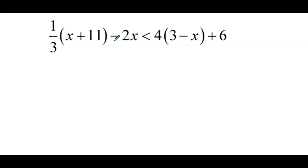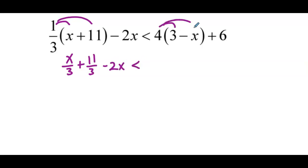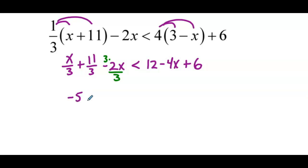Now: 1 third times the quantity x plus 11, minus 2x, is less than 4 times the quantity 3 minus x, plus 6. We distribute 1 third: x over 3 plus 11 over 3 minus 2x. Then distribute 4 on the right: 12 minus 4x plus 6. Combining like terms on the left — converting negative 2x to negative 6x over 3 — we get negative 5x over 3 plus 11 over 3 is less than 18 minus 4x.